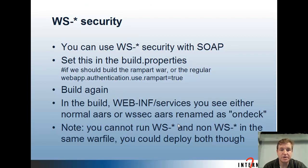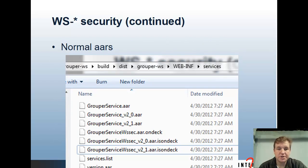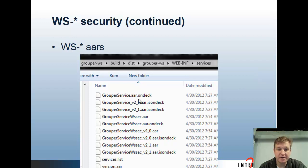For WS-Star security with SOAP, you need to set 'useRAM=true' in the build.properties, then build again. In the build, in the services directory under webinf, you'll see that the normal AARs have 'ondeck' as an extension and the WSSEC AARs are ready to be used. Note that you can't run WS-Star and non-WS-Star SOAP in the same war file — you can deploy both into separate JVMs if you want. When you don't have WS security, all the WS security AARs have 'ondeck' as an extension and won't be used. When you do have WS security, the regular ones have 'ondeck' and the WSSEC ones do not.